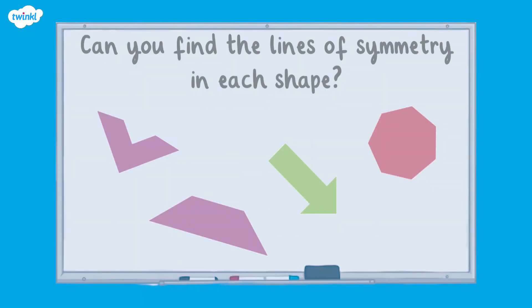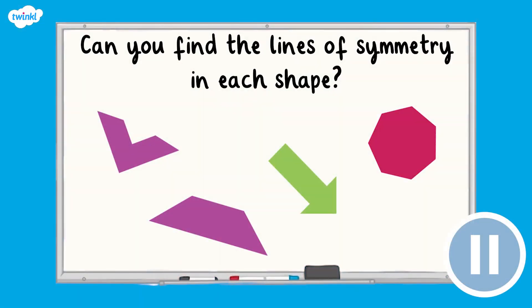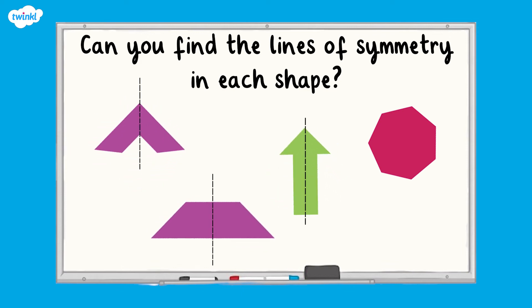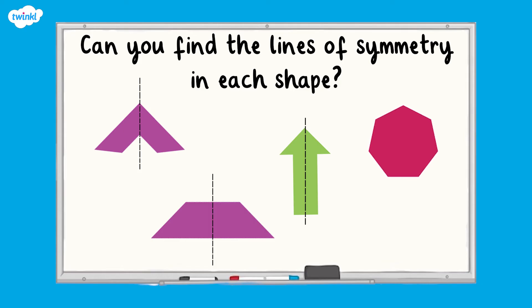Take a look at these different shapes and see if you can find the lines of symmetry in each shape. Here are the answers — we'll rotate each shape so that you can find the lines of symmetry. This shape is a regular heptagon, which means it has seven equal sides, so we know it has seven lines of symmetry.